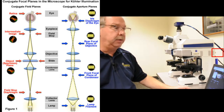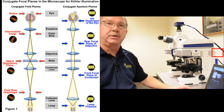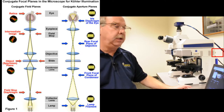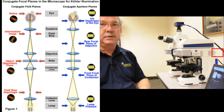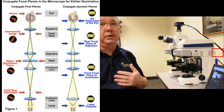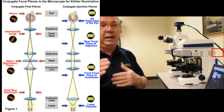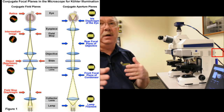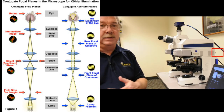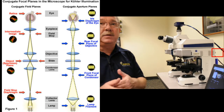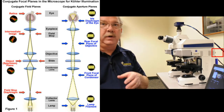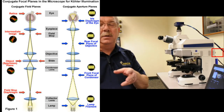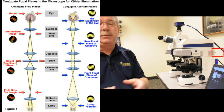In conoscopic imaging, we want to view not the field planes but the aperture planes. When we look at a crystalline material in polarized light, light entering that crystal is split into at least two orthogonal planes. The light travels at different speeds along the two axes of those orthogonal waves, so they become out of phase with one another. Those rays recombine in the rear focal plane of the objective and interfere with constructive and destructive interference to form the optical interference figure.